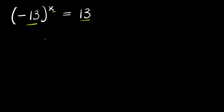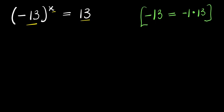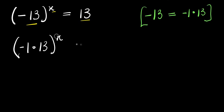Let's start it this way. If you have negative 13, just like what we have here, this is just like writing negative 1 times 13. So you will replace this negative 13 here with negative 1 times 13. So we are going to have negative 1 times 13 to the power of x equals 13.